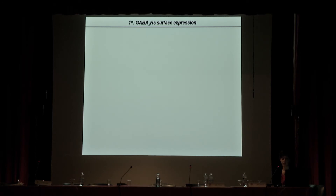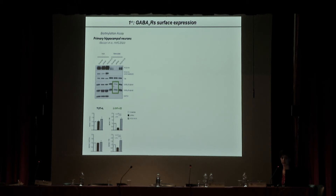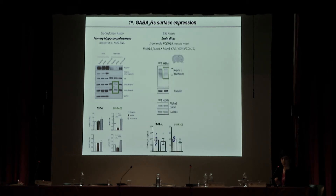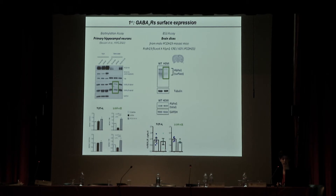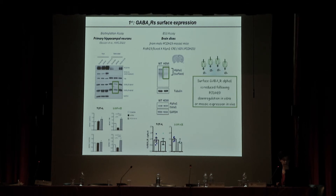Concerning surface expression of GABA receptors, we already observed in vitro that down-regulating protocadherin-19 leads to a decrease in the amount of GABA receptors on the surface. We are now reconfirming this in vivo using mouse models. In a PCDH-19 mosaic mouse — obtained by cross-breeding our PCDH-19 flox mouse with a Cre-expressing mouse — while there is no change in total levels of alpha-1-containing GABA receptors, there is a significant decrease in the amount of these receptors on the surface.